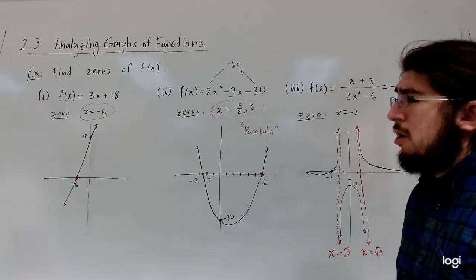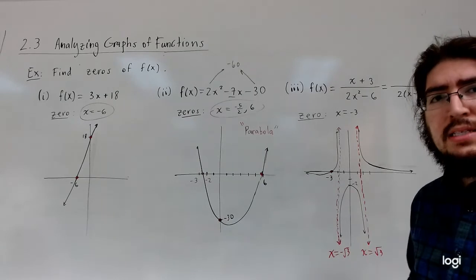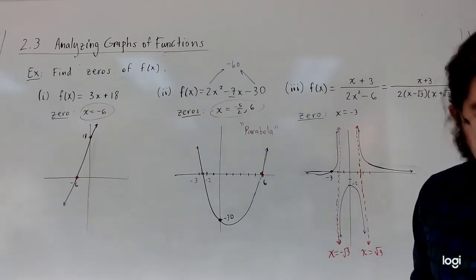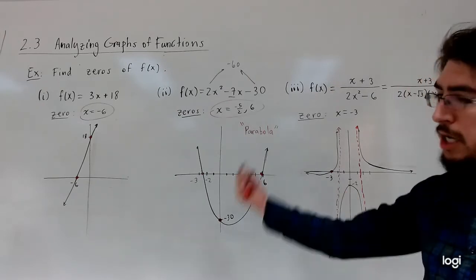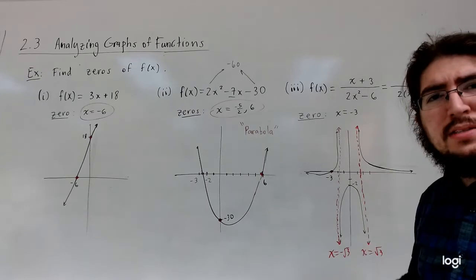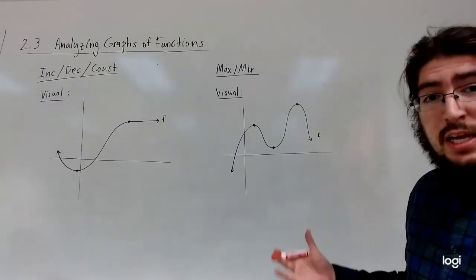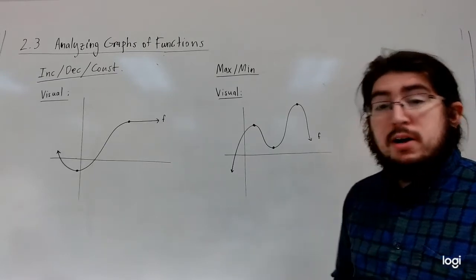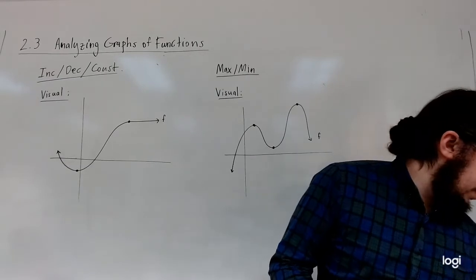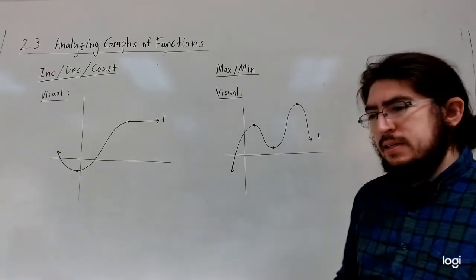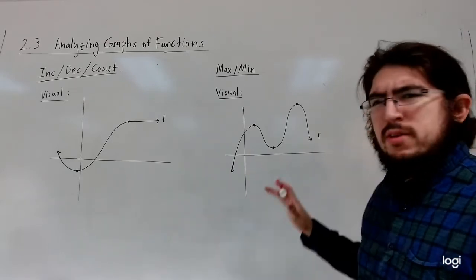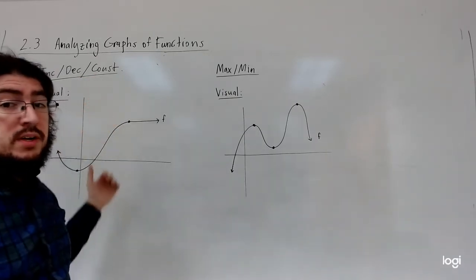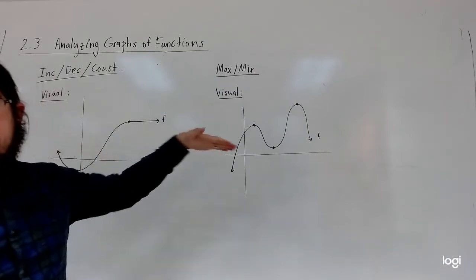Now I want to talk about some other properties of functions — specifically when a function goes up, goes down, or remains constant. I'll discuss these visually rather than writing formal definitions. For increasing, decreasing, and constant: as you go from left to right, the function is either going up, going down, or showing no vertical change at all.